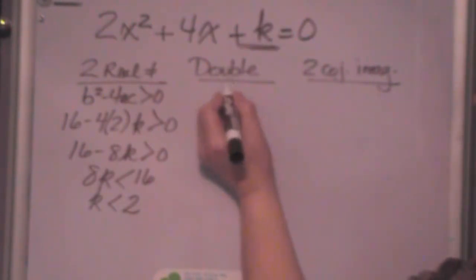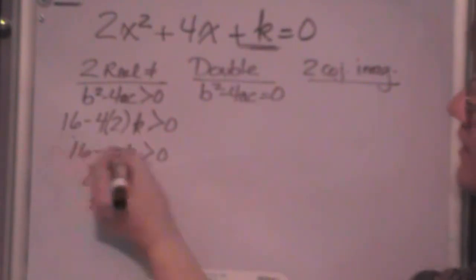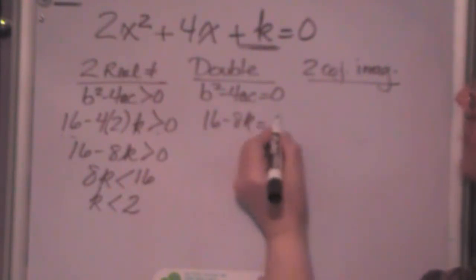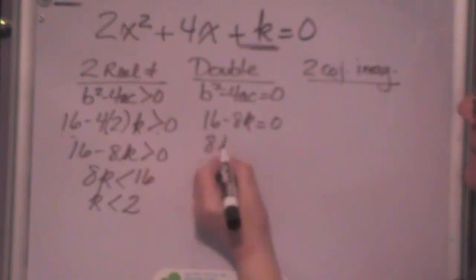Well, over here for a double root I know my discriminant will be equal to zero. So b squared minus 4ac is equal to zero. And over here to get this I just put the same equation only I change it to an equal sign. 16 minus 8k equals zero. That means that 8k is equal to 16 and k is equal to 2.